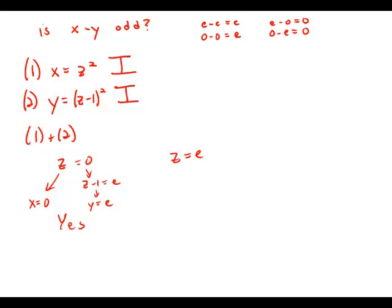Suppose z is an even number. When we square an even number, we get an even number. So x would be even. If we subtract one, z minus one, that would be an odd number. And when we square that, we get another odd number. So it means y would be odd. So again, what we have is that x and y are opposite polarities. One is even, one is odd. So again, the answer to the question is yes.